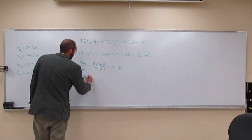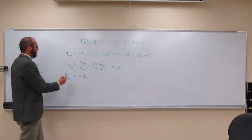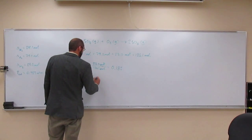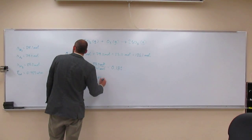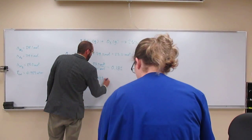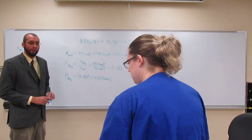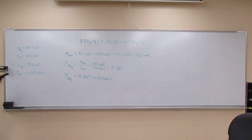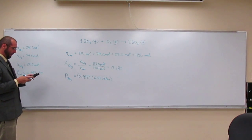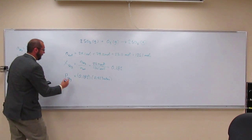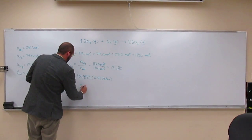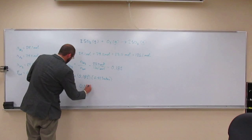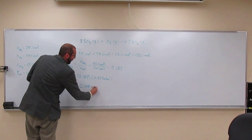The mole fraction of sulfur trioxide is 0.182, and we multiply that by the total pressure, 0.923 atmospheres. So the partial pressure of sulfur trioxide is 0.168 atmospheres.